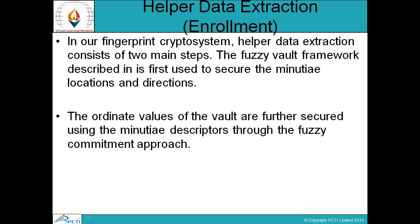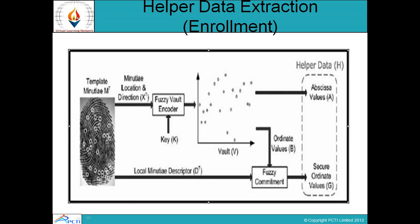The author shows the security of the fuzzy vault can be improved by encrypting these polynomial evaluations using a fuzzy commitment scheme. In our fingerprint crypto system, helper data extraction consists of two main steps. The fuzzy vault framework is first used to secure the minutia location and direction, and the ordinate values of the vault are further secured using the minutia descriptor through the fuzzy commitment approach.